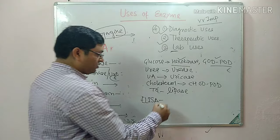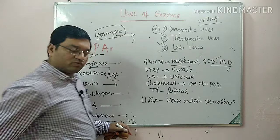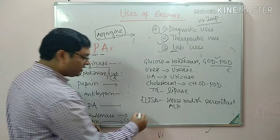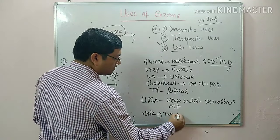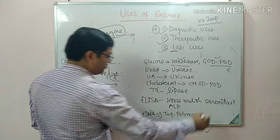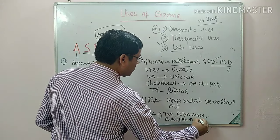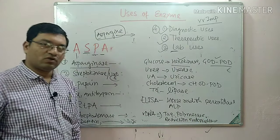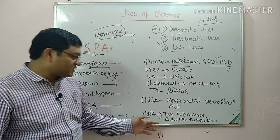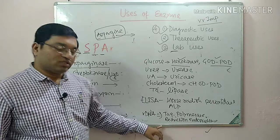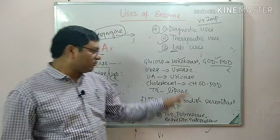In ELISA (enzyme-linked immunosorbent assay), we use horseradish peroxidase and alkaline phosphatase. In recombinant DNA technology, we use Taq polymerase in PCR, restriction endonuclease in recombinant DNA technology and RFLP (restriction fragment length polymorphism), DNA polymerase, and DNA ligase — a number of enzymes are used in recombinant DNA technology.